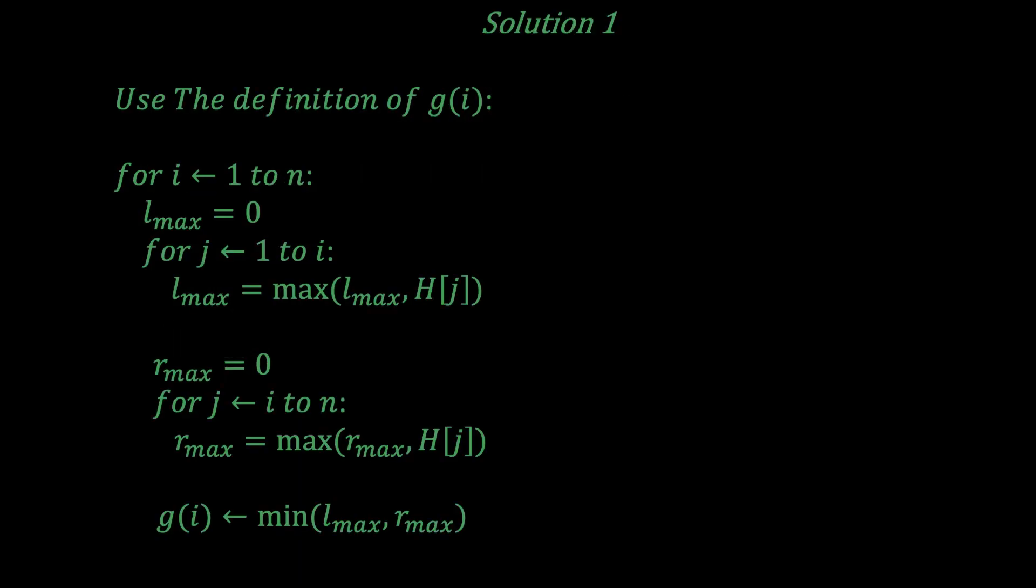One possible solution you might think of is to use the definition of g(i) that you're given. You can loop from i equals 1 to n, then for each i, first calculate the maximum of H[1] to H[i]. You do this by initializing a max variable to 0, which is the smallest value possible in H, then looping a variable j from 1 to i, and taking the maximum of all the elements as you go along.